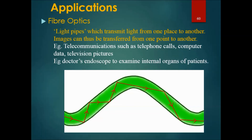As long as the tube is not bent too much, the light ray that goes through the tube will hit the wall. Because this angle over here is more than the critical angle, it will undergo total internal reflection and bounce back. Once it's here, the angle is once again more than the critical angle, and it will bounce back. Therefore, the light can travel through this tube without exiting and reach the final point.